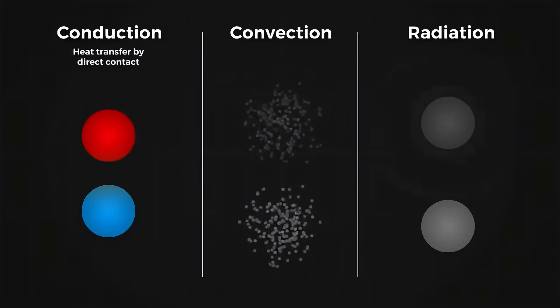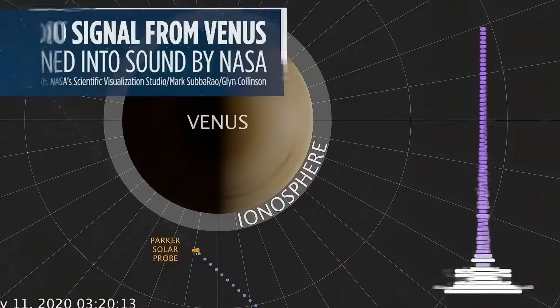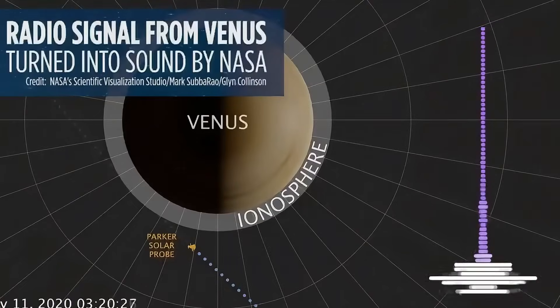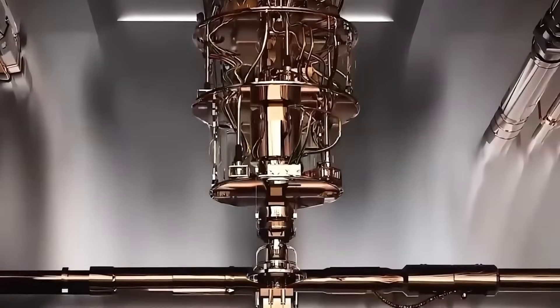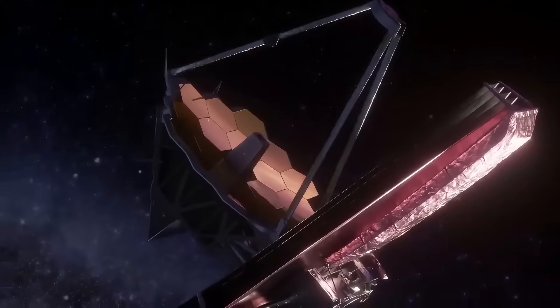This isn't just another distant celestial object or a predictable quirk of gravitational lensing. It's something entirely new, a potential tear in the fabric of space-time itself. It all began when our quantum AI, designed to sift through terabytes of JWST data, detected an unexpected pattern.